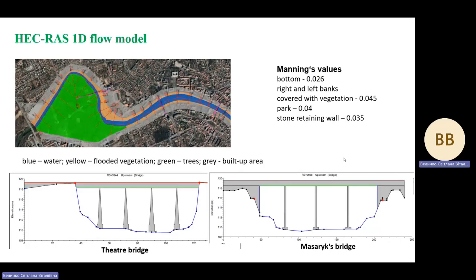Surface roughness data for the model were taken according to analysis of land cover. The bottom of the Ush river is covered with large stones and pebbles, and the dikes have grass vegetation. Calibration of the model and determination of the Manning coefficient took place according to the historical flood of 1992. Roughness data were taken separately for the bottom, for the right and left banks covered with vegetation, for park territory, and for stone retaining walls.